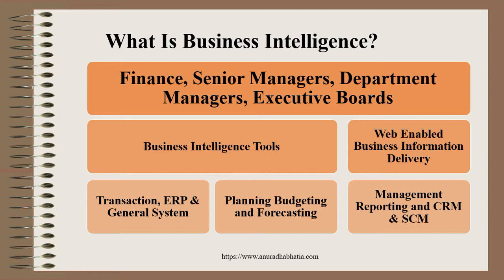How does business intelligence come into the picture? Transaction processing systems, ERP, and general systems are small data marts or small systems designed to complete a particular task in one particular unit of an organization. For that, we need planning, budgeting, and forecasting, and then there is reporting. When all these three things combine together, it makes a complete MIS. Now, how does that complete MIS become an intelligent system?